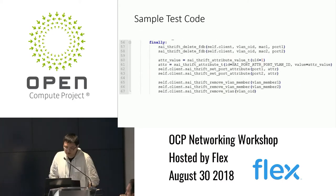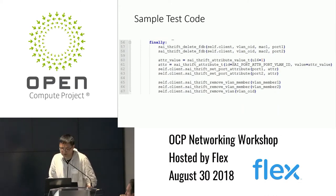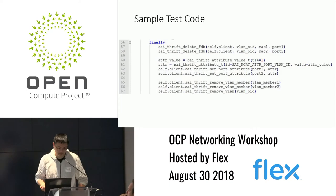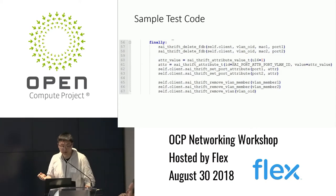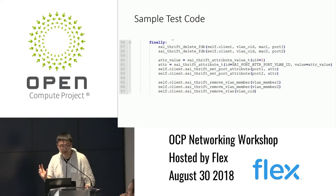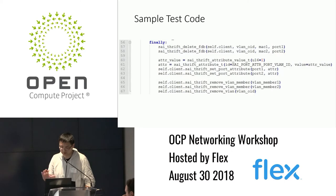The final cleanup part is very similar to the configuration part. Essentially, we call the Thrift function, which passes the attributes and object ID to the switch. The switch then performs the configuration and does all the cleanups.